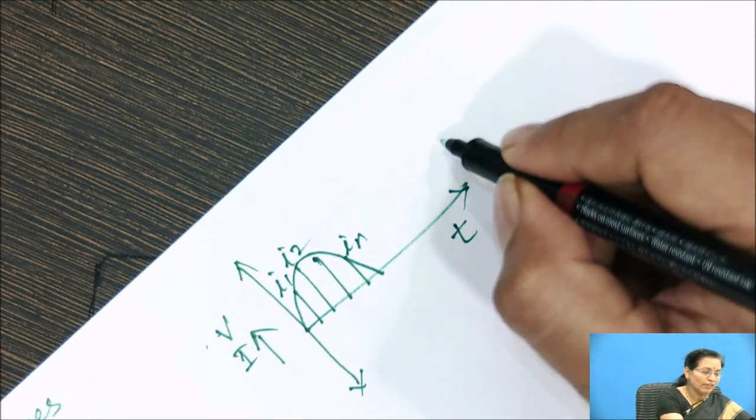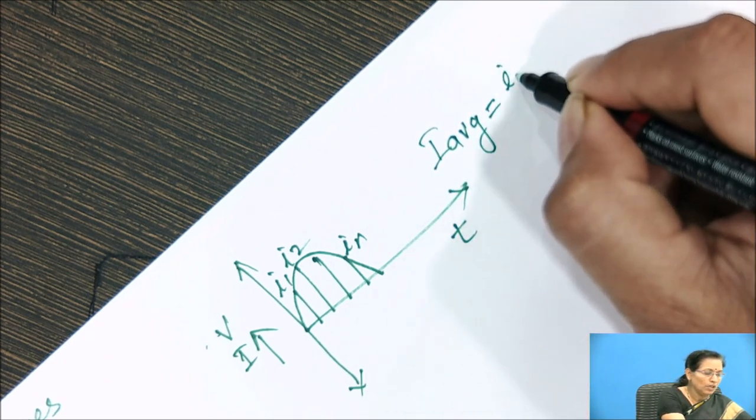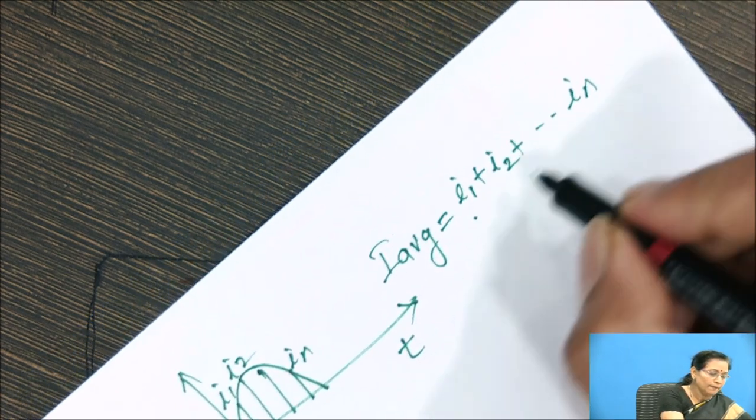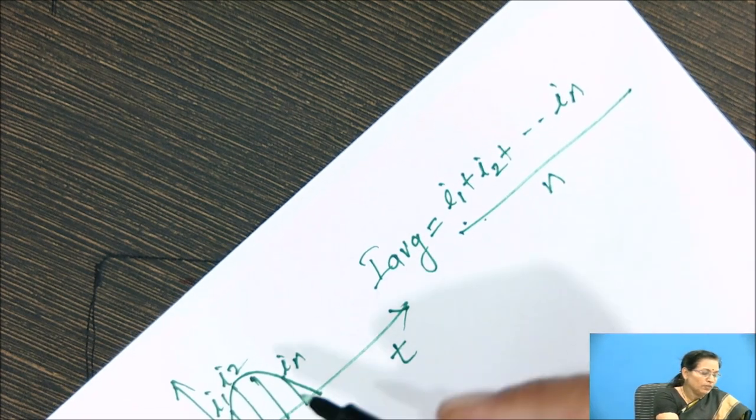If we calculate the average of that, that is I average equal to I1 plus I2 plus In divided by N is the average of this half cycle.